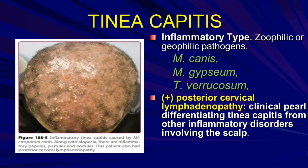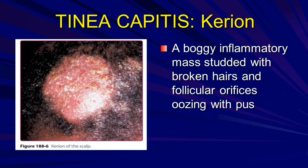Inflammatory tinea capitis is associated with Microsporum canis. There is alopecia with papules, pustules, and nodules. The patient has a history of posterior cervical lymphadenopathy — remember, positive posterior cervical lymphadenopathy clinically differentiates tinea capitis from other inflammatory disorders of the scalp. The kerion is boggy inflammation with broken hairs and follicular orifices oozing pus.